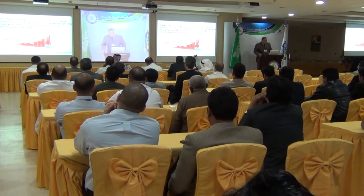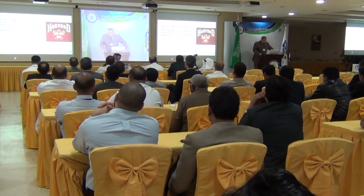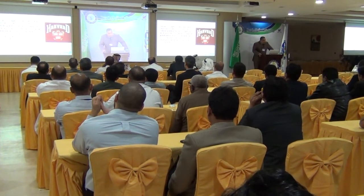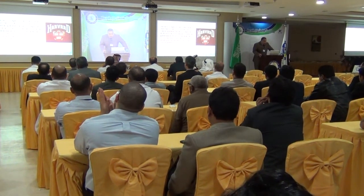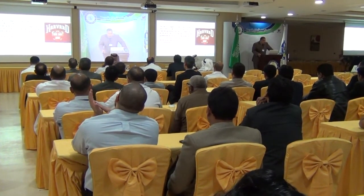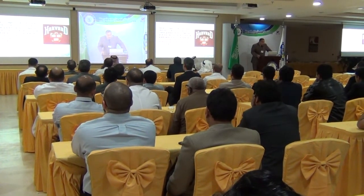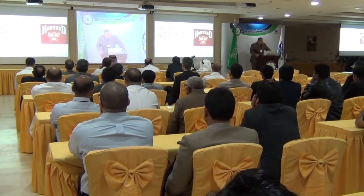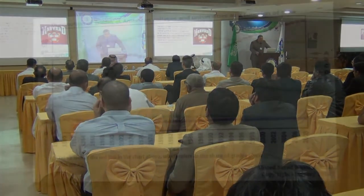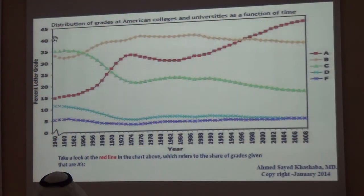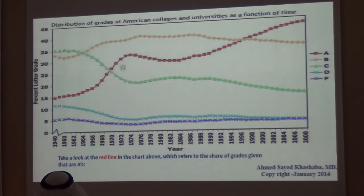As you can see in this chart, the red curve represents the A grade — showing the most obvious increase across all grades from 1940 to 2008. By 2008, about 43–44% of the GPAs of all students in the USA were A's. You can also observe a sudden surge in the rate of increase during a particular era.